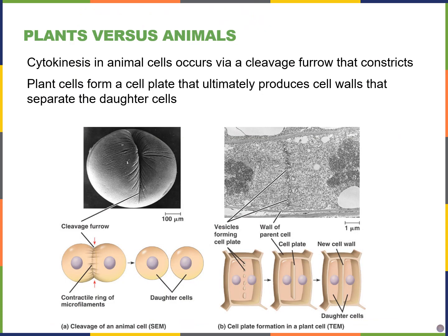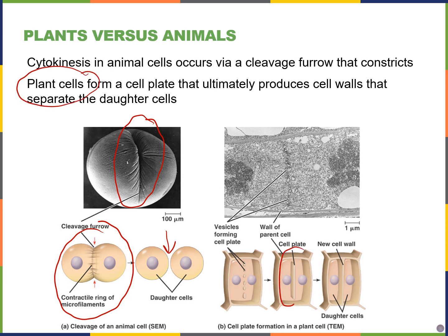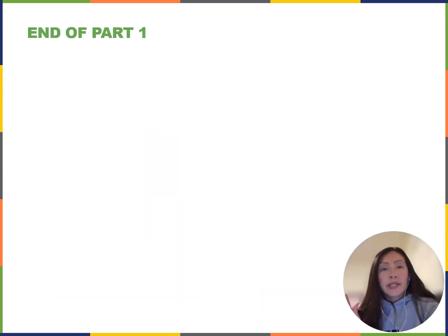As a review from the mitosis lecture: cytokinesis in animal cells occurs through a cleavage furrow formed by the contractile ring of actin filaments, which constricts and ultimately separates the two cells. In plant cells, since they have a cell wall, they need to form a cell plate that ultimately leads to the formation of the cell wall to separate the daughter cells. That takes us to the end of our first video for Chapter 11, and in the second video we'll look at meiosis II in more detail.